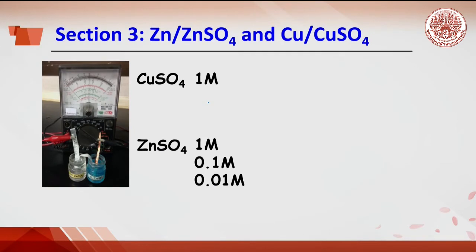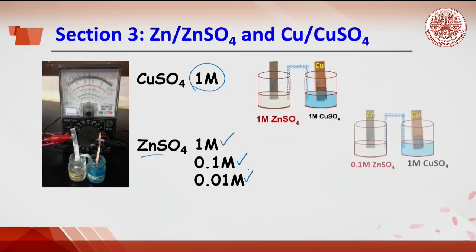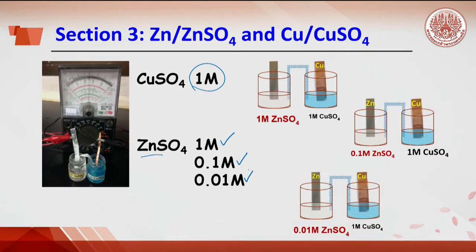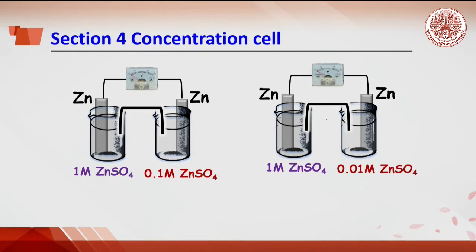Section 3 investigates the effect of zinc concentration on EMF. A half cell of copper with concentration of 1 molar is connected with a half cell of zinc at concentrations of 1 molar, 0.1 molar, and 0.01 molar. The EMF values are then compared. The result from the 1 molar zinc experiment can be taken from Section 2.